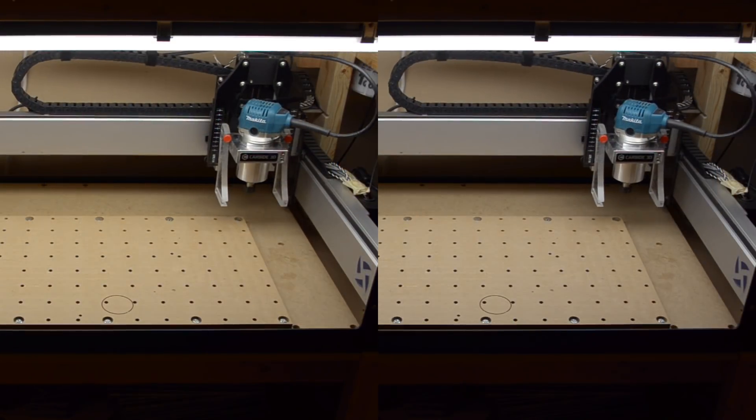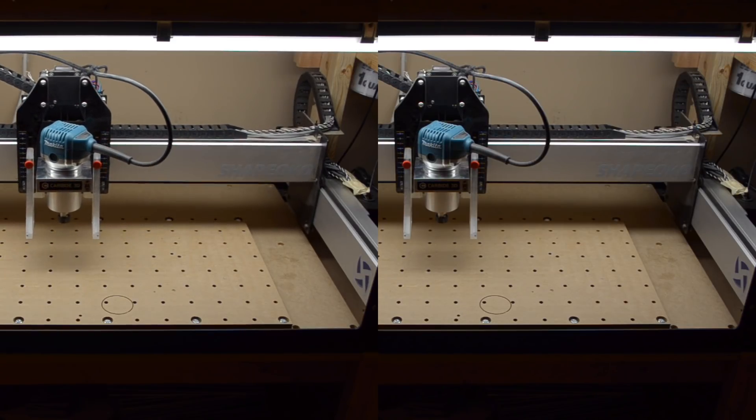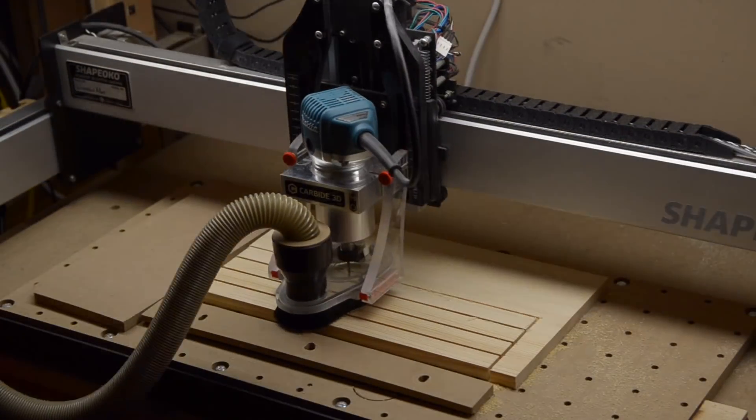By default, the Shapeoko's motion control board is set to rapid at 5000 millimeters per minute or just under 200 inches per minute. I know it can do better, so after this project, I cranked it up to 500 inches per minute. Side note, only do this if you have an easily accessible kill switch because any crashes that happen are going to be more spectacular. This applies to both running into gantry limits and also part and fixture collisions.